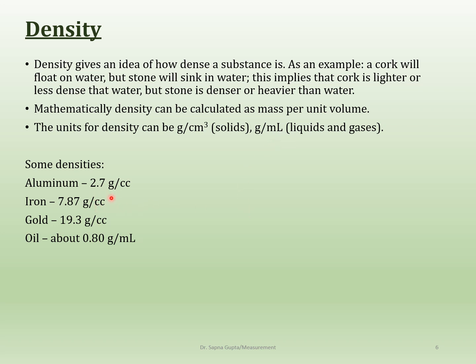Aluminum has a density of 2.7 g/cc, iron is 7.87, gold is 19.3 — pretty heavy — and oil is 0.8 g/mL. Water is 1 g/mL, so you can easily see what will sink or float in water. Anything with a density greater than 1 will sink; anything less than 1 will float.